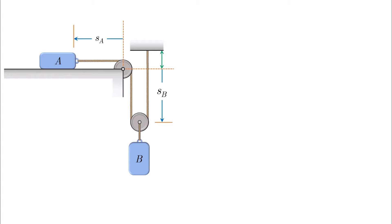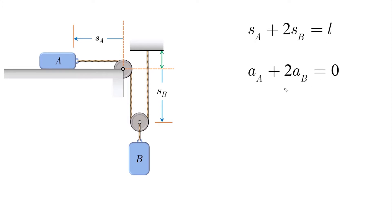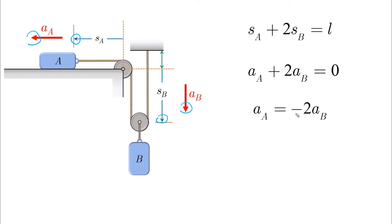Let's take a common example from dependent motion where we have two particles with two positive coordinates assumed. This is our cable length, and if we take two times the derivative we will get the acceleration equation. The accelerations have the same direction of SA and SB, which leads to a relationship between the two accelerations: if one acceleration is positive, the other will be negative. For example, if AA equals one meter per second squared, then AB becomes minus one half.